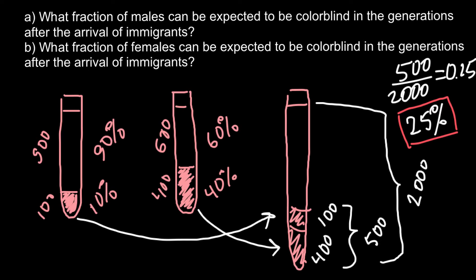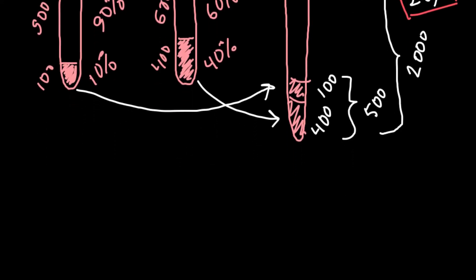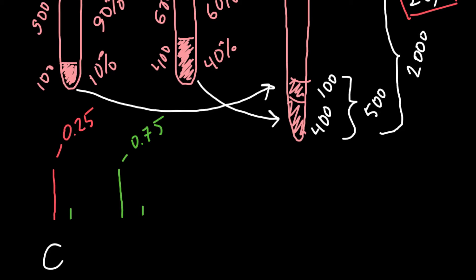Because males can only have two genotypes — one with a defective X chromosome paired with a normal Y chromosome, or one with a normal X chromosome — this gives us a probability of 0.25 that a male will have the defective X chromosome and 0.75 that he will have a normal X chromosome. So 25% of males would be affected and 75% would be unaffected.